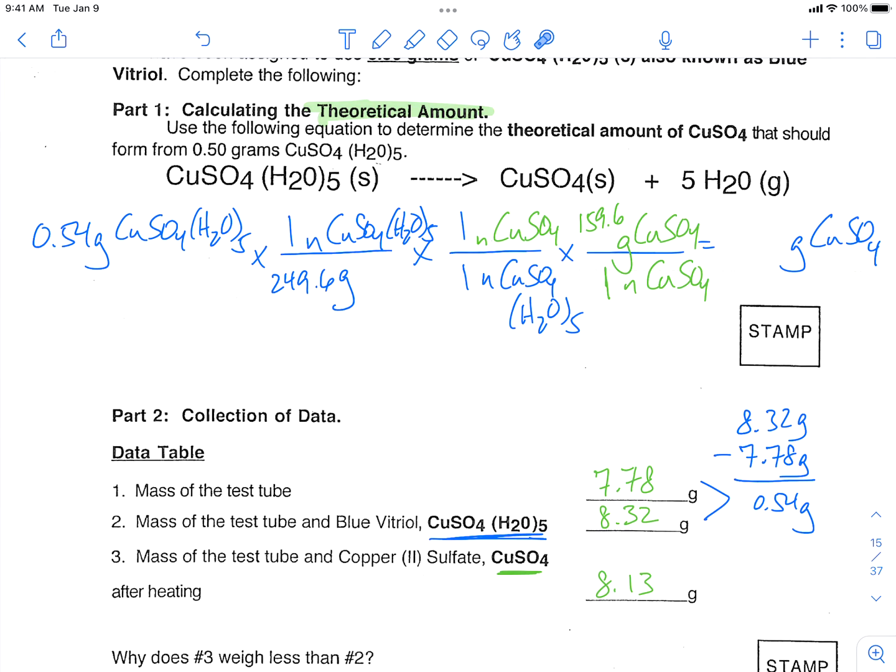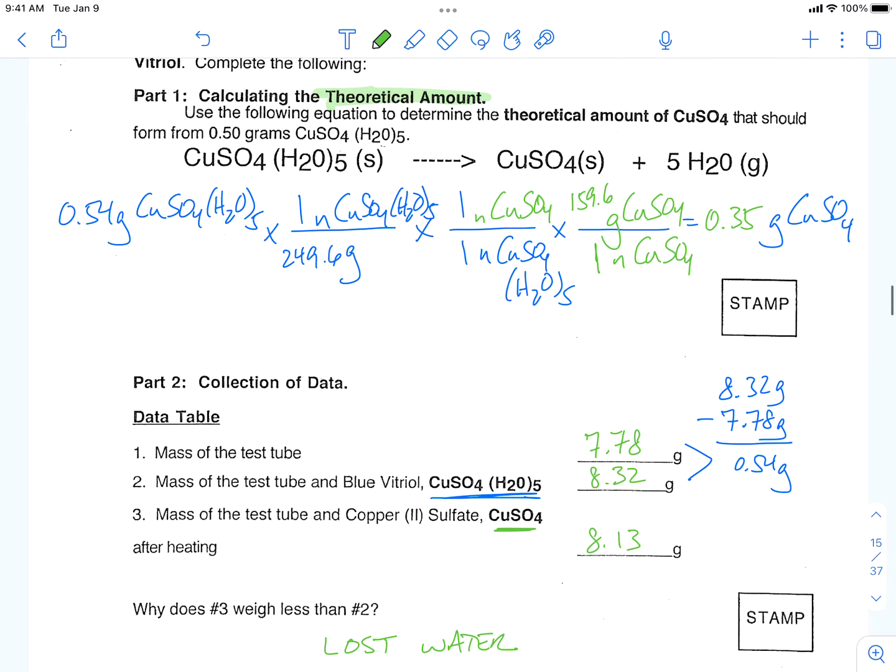So 0.54 divided by 249.6 times 159.6 is going to give us our answer, which is around 0.345. Rounding to two significant figures, I would go to 0.35 grams. So this is our theoretical mass, which we're going to use for our percent yield calculation. 0.35 grams is our theoretical.